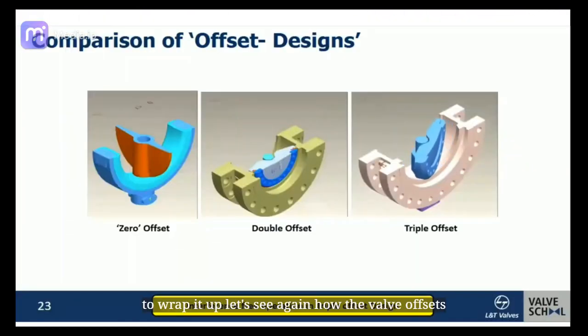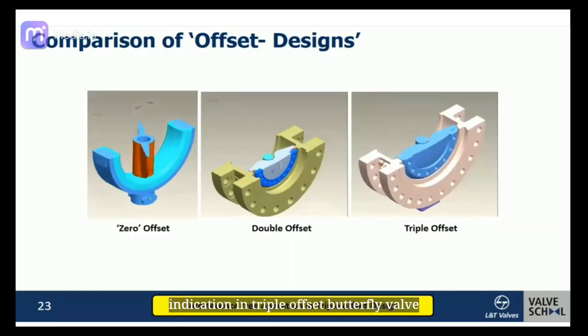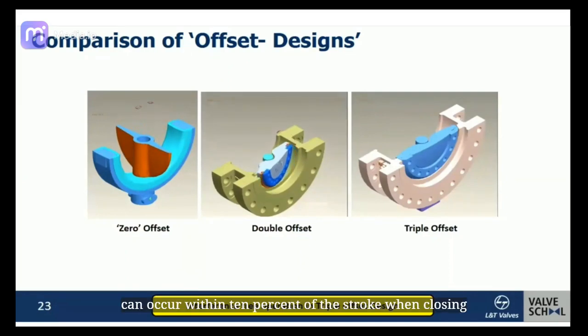To wrap it up, let's see again how the valve offset prevents rubbing between disc and seat. As you see, there is not any rubbing indication in triple offset butterfly valve and the contact of disc and seat is only at the end of the stroke. However, for concentric butterfly valve, rubbing can occur within 10% of the stroke when closing. It is much less in double offset type but still there for the last 2 to 3 degrees.